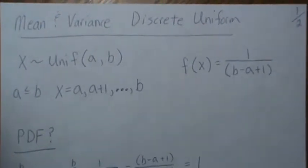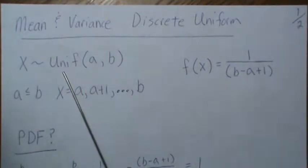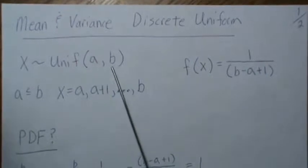In this video we're going to look at the mean and the variance of a discrete uniform. And so here we're going to let X be a discrete uniform from the parameters A to B.